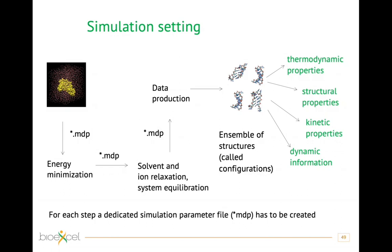After relaxation, you need to bring the system to the correct temperature and pressure conditions. When all these steps are done, you proceed to the production simulation, where all restraints are released and you start real data production, generating an ensemble of conformations from which you can calculate kinetic and other properties. Each of these steps is performed with a dedicated MDP file.